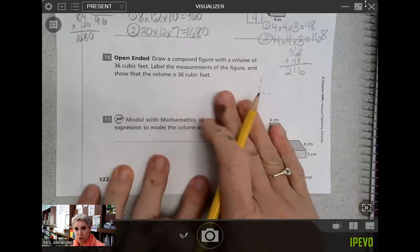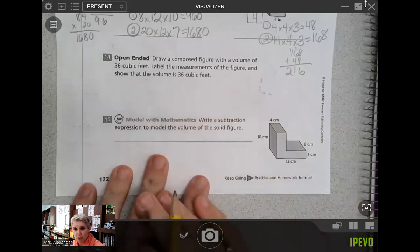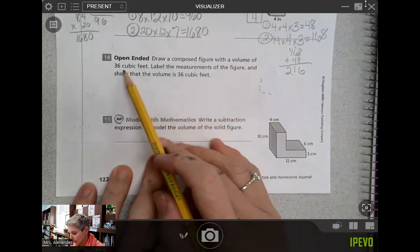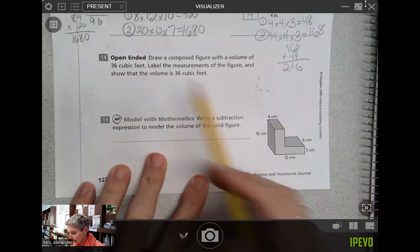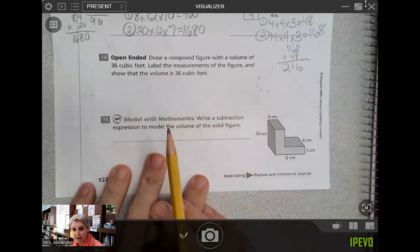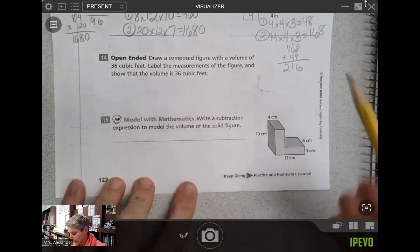Number 14, it could look a lot of different ways if you were able to draw a composed figure that has a total volume of 36 cubic feet and label it. I'll look at that in class if you want to show me that. They can look a lot of different ways.